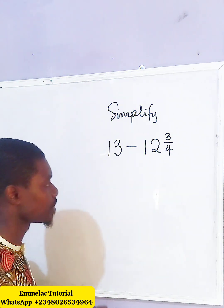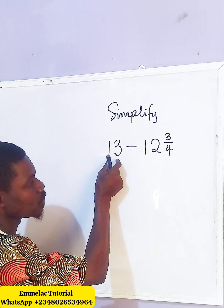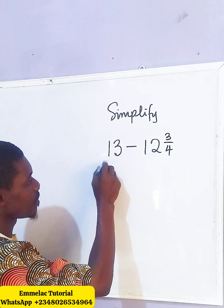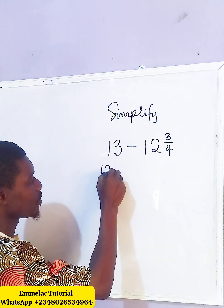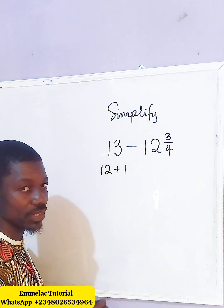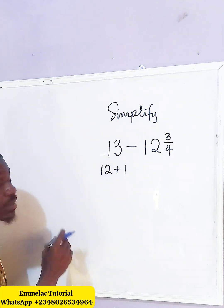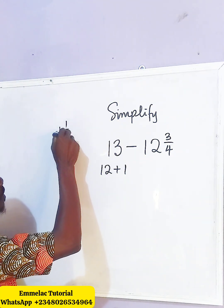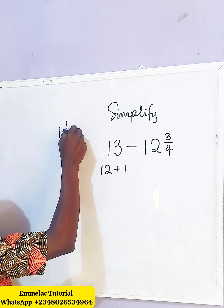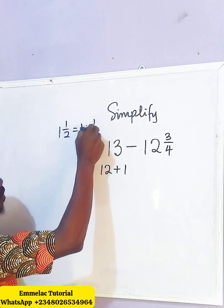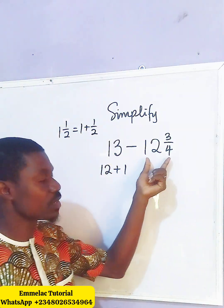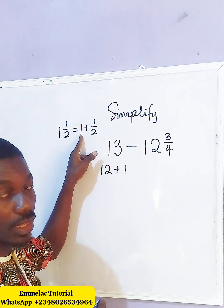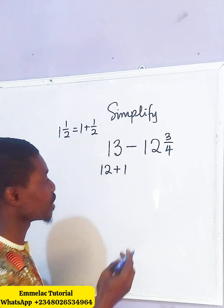The first thing is, let us see how we can get 12 from 13. So, 13 can be written as 12 plus 1. Let's take note that in terms of mixed fractions — for example, 1 and 1 over 2 is the same as 1 plus 1 over 2 — which means we can split a mixed fraction into a sum of a whole number and a fraction.